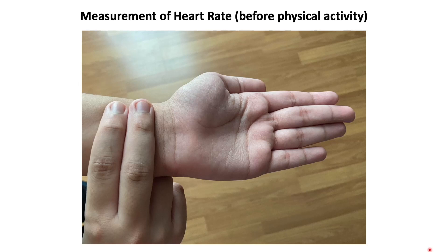Repeat the same procedure twice. After that, replicate the procedure for the other two subjects — Student B and Student C. Record the value of the heart rate and calculate the mean values.